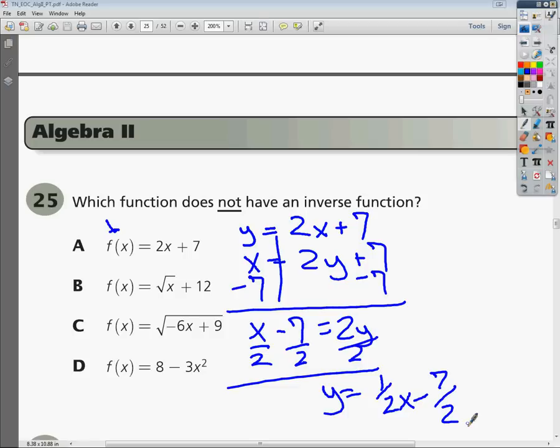Now to determine whether it's an inverse function or not, what I need to do is just graph it and do the vertical line test. So I would go down to negative 7/2, which is almost 4, somewhere down in this general vicinity. And I go up 1 and over 2. So I would just do this sort of thing. And this passes the vertical line test. So I do have an inverse function for that one.